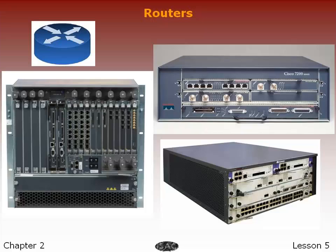A core router resides within an autonomous system as a backbone to carry traffic between edge routers within an ISP's autonomous system. A core router uses an internal BGP protocol to communicate with other ISP edge routers, other intranet core routers, or other ISP intranet provider border routers.